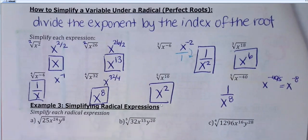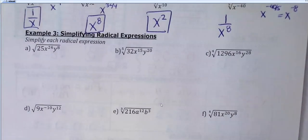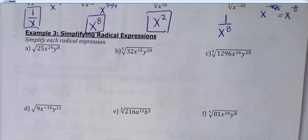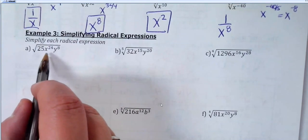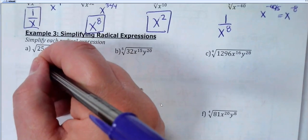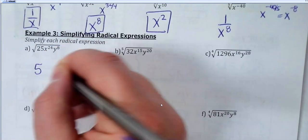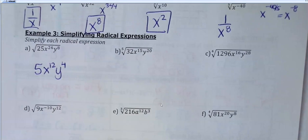All of these are perfect, so you shouldn't have anything left under any of the radicals — just pay attention to whatever the index is so you know which list to look at. I have the squares, cubes, fourths, and fifths up on the board. On this first one I have square root of 25x to the 24th y to the 8th. Take the square root of 25, which is 5. Then the power on x would be 24 divided by 2, which is 12. And y to the 8th divided by 2 is y to the 4th. That's all you have to do.